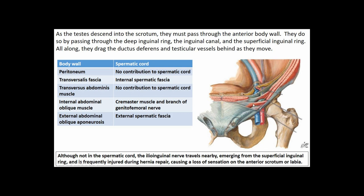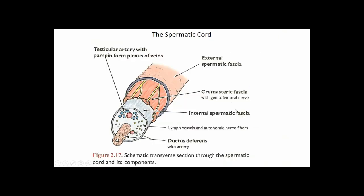Passing through the transversus abdominis muscle, the spermatic cord gets nothing. As it goes through the internal abdominal oblique, a slip of muscle attaches to it forming the cremaster muscle, which helps raise the testes, and a branch of the genitofemoral nerve innervates that portion. As it passes through the external abdominal oblique at the superficial inguinal ring, it acquires the external spermatic fascia, tethering everything together. The ilioinguinal nerve exits in the space between the transversus abdominis and internal abdominal oblique, traveling to the skin near the upper genitalia.